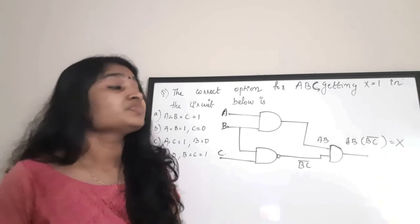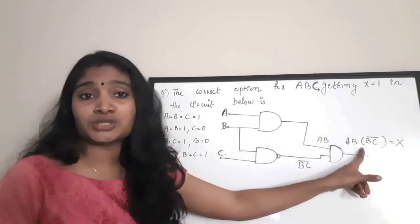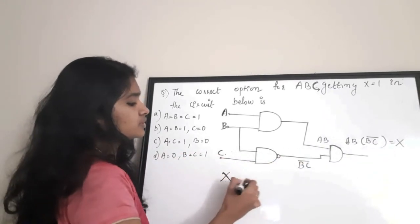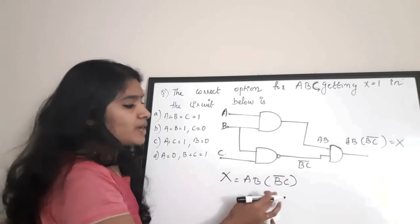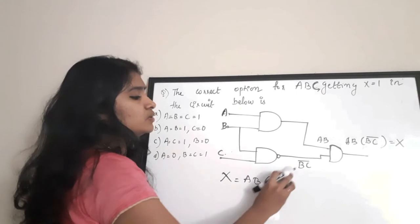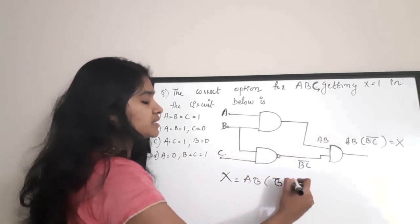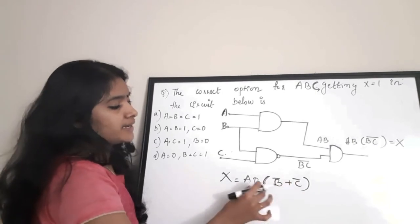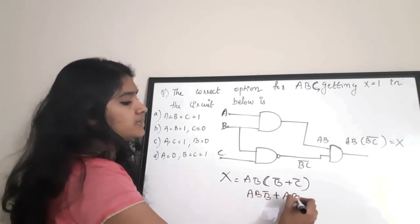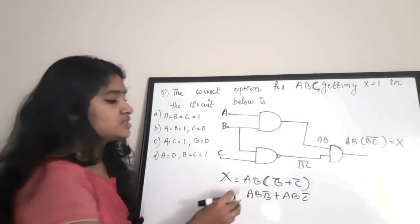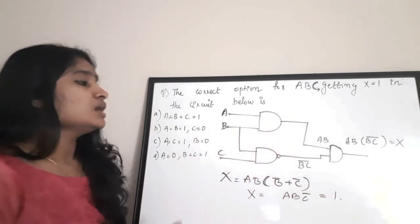To answer this question, you don't need to look at the circuit — just look at the boolean expression. Output X = AB · (BC)̄. Applying De Morgan's theorem, (BC)̄ = B̄ + C̄. So expanding: X = ABB̄ + ABC̄. Since B·B̄ = 0, that term cancels, leaving X = ABC̄.